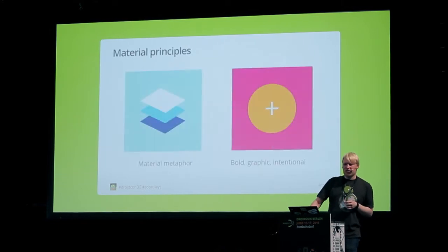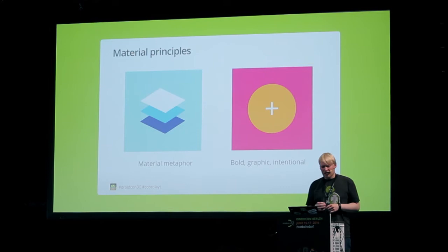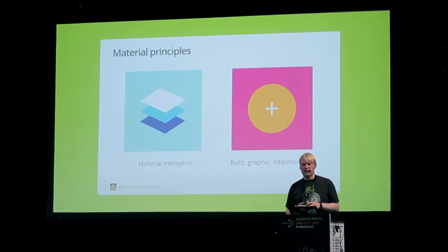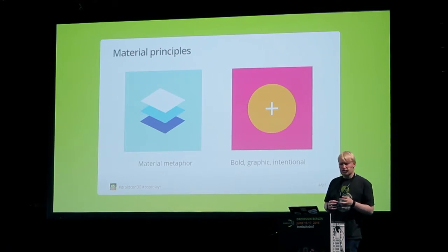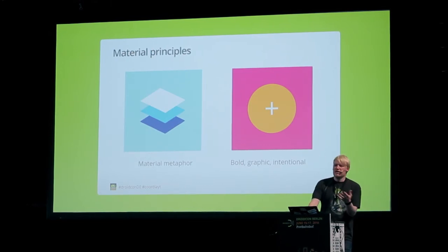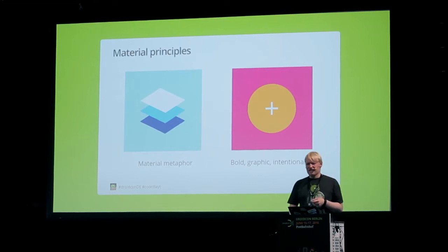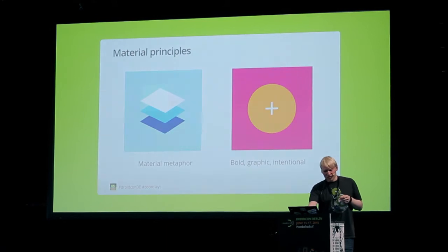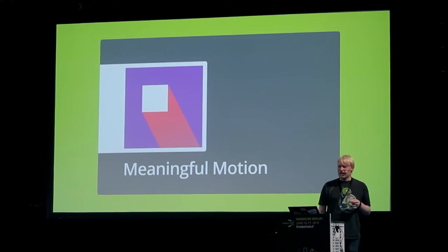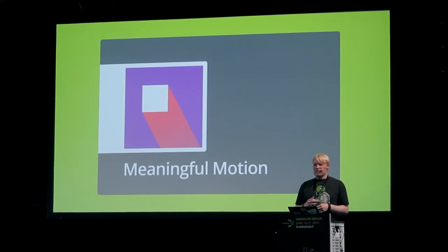Let's have a look back at the material core principles. The first principle is the material metaphor — the digital UIs you're building should behave like material, so the user has a feeling of how it will behave. The second one is that everything should be bold and graphic, so important actions can really jump out and you can be sure the user will see them. Your apps will look great on screenshots, but users tend to interact with your apps, so there's a third principle: meaningful motion.